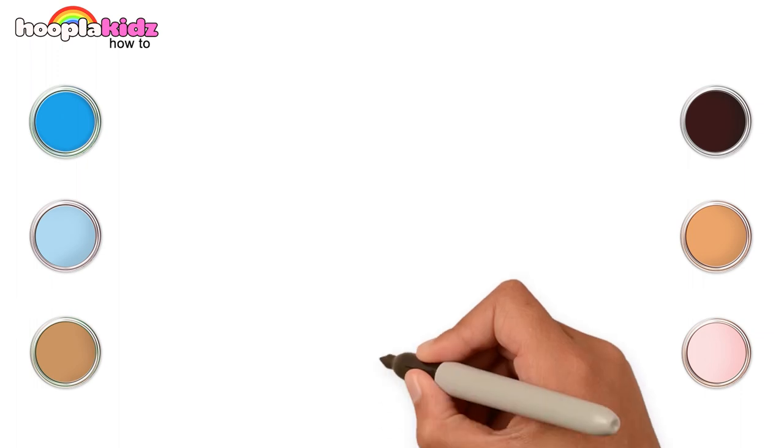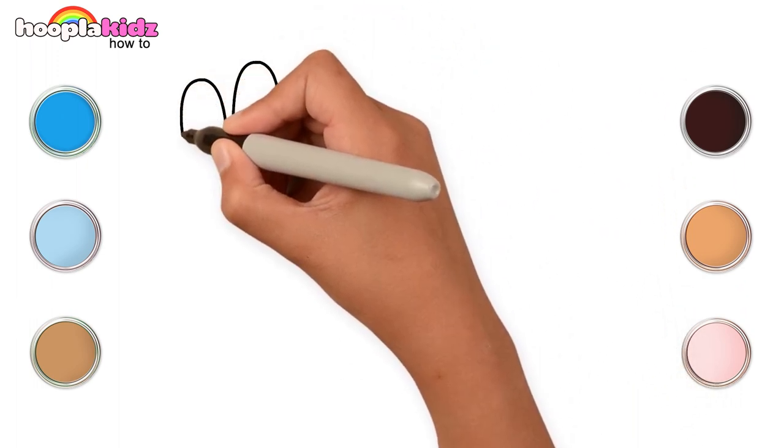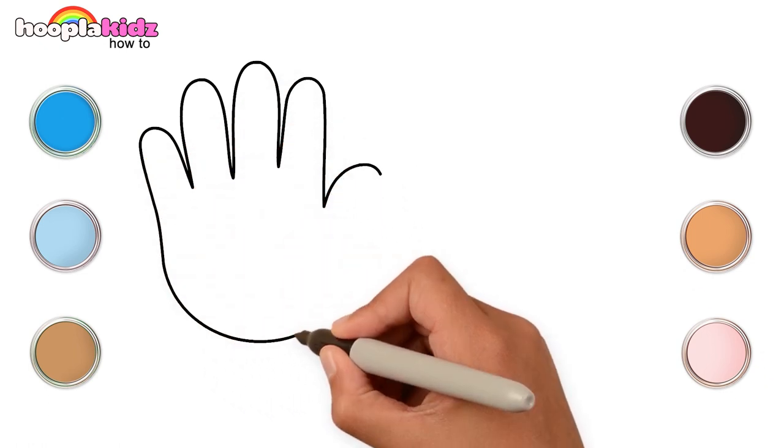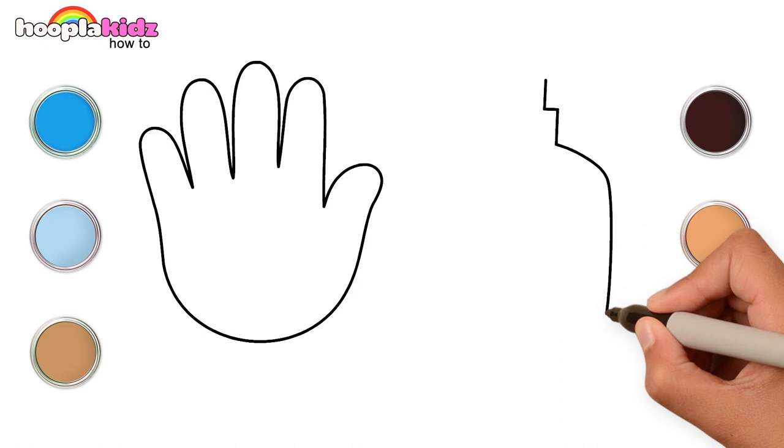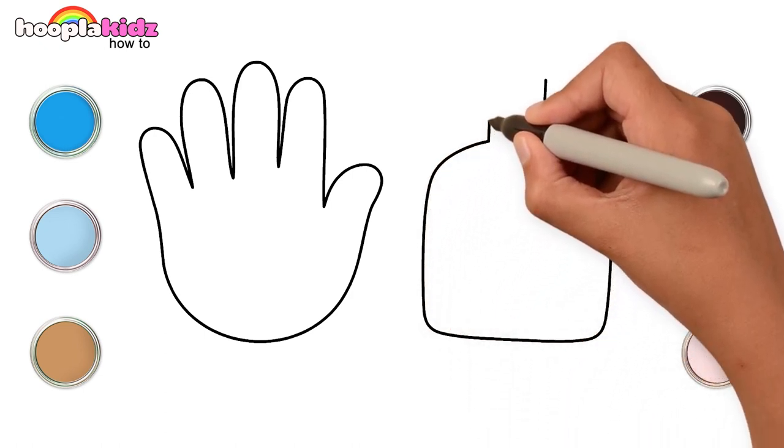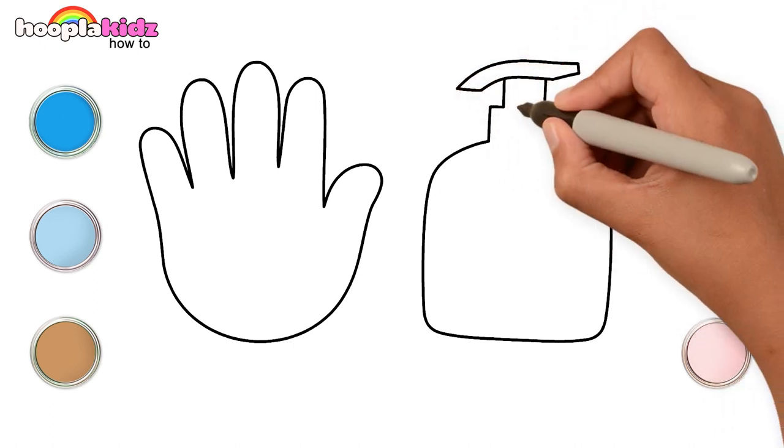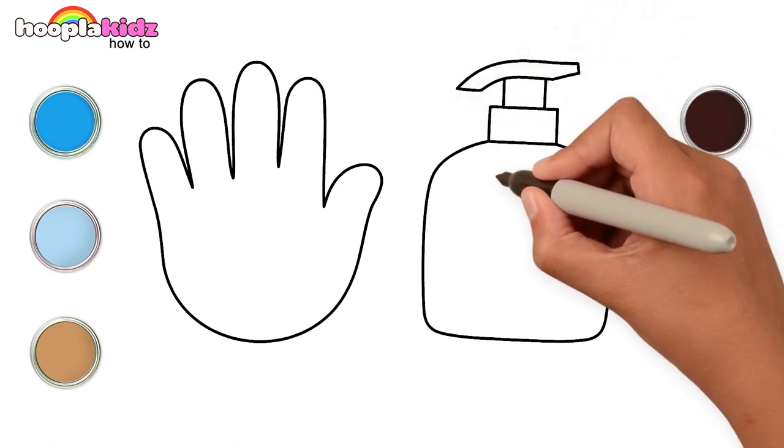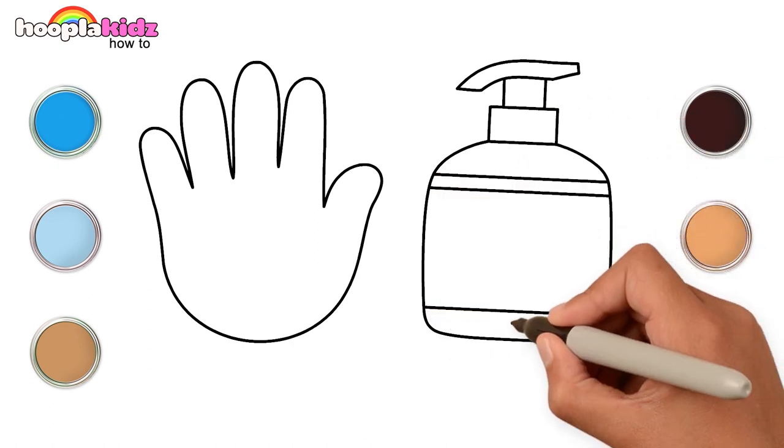Hi kids! Let's draw a hand sanitizer today. First, draw the hand. It's really simple. Now draw the sanitizer. Just like this. And a pump on top. Connect the square. And four lines across. Details are important too.